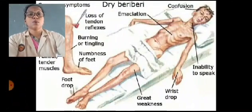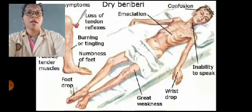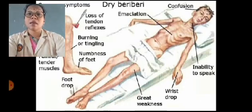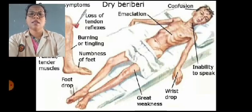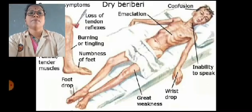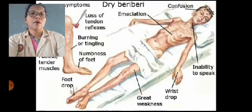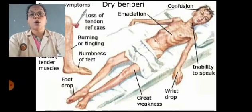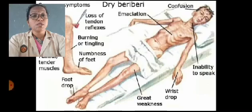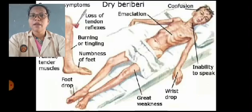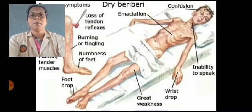The second disease caused due to vitamin deficiency is vitamin B deficiency, that is beriberi. In beriberi, the symptoms are emaciation — extreme thinness of the body — confusion, nervousness, inability to think properly, inability to speak, wrist drop (the muscles in the wrist cannot work properly), great weakness, foot drop, inability to stand, numbness of feet, pins and needles sensation, burning or tingling sensation, and loss of tendon reflexes.